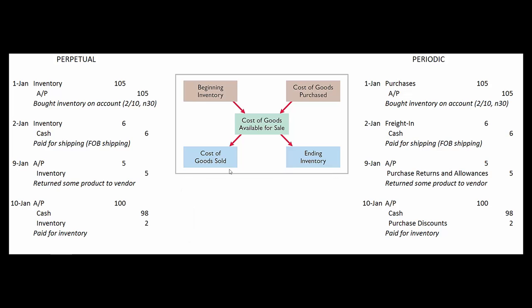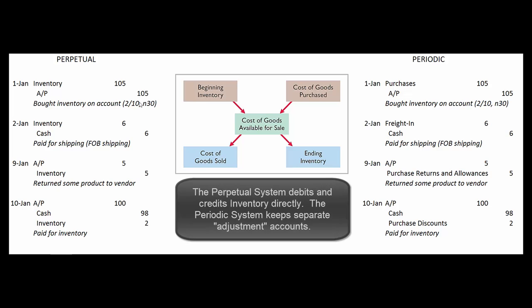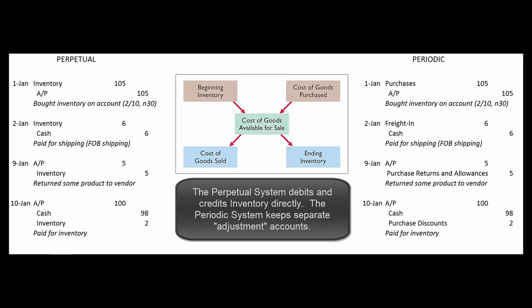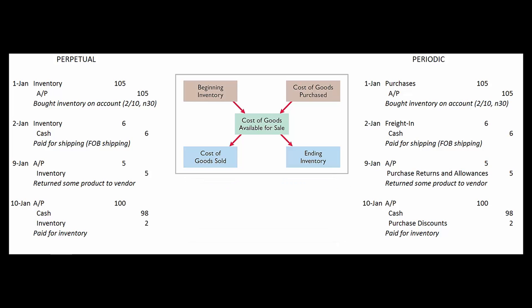The second difference is that the perpetual inventory system reduces inventory whenever we return stuff and when we pay early to take a discount. It also increases inventory when we pay for freight. The periodic inventory system, on the other hand, keeps different accounts for purchases, freight costs, returns and allowances, and purchase discounts. That's all there is to it. Hope this helps.